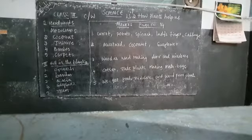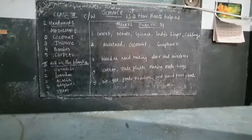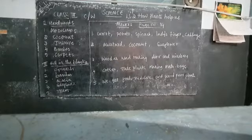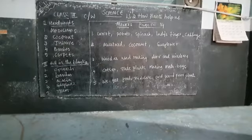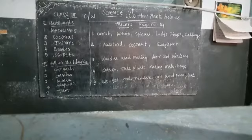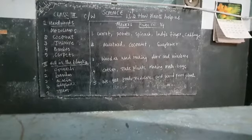Second question: name three plants which give us edible oil. Second answer is mustard, coconut and sunflower. Third question: what is wood used for? Wood is used for making doors and windows. Fourth question: name two plants which give us fibres. Cotton and jute plants are used in the making of mats and bags.